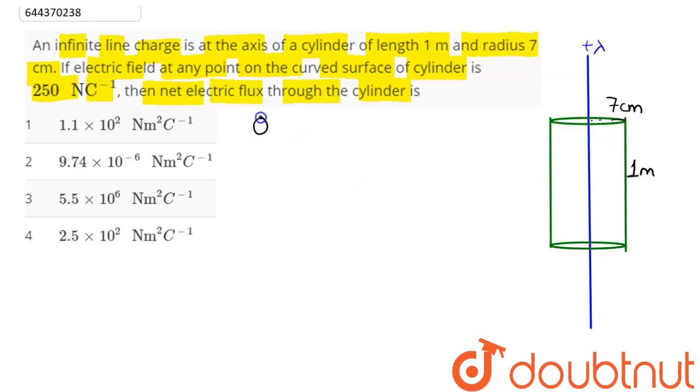We can say here electric field at the surface is 2k lambda by r. We have here net electric flux given as surface integral of electric field, which is equal to q enclosed by epsilon. This is our Gauss law.